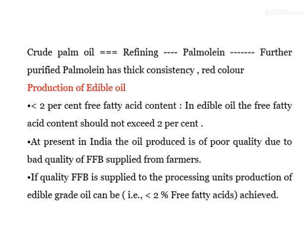The crude palm oil is then refined. Purified palm oil has a thick consistency and red color. For edible oil, free fatty acids content must not exceed 2 percent. Oil from the mesocarp (45–50%) is light yellow to orange-red depending on carotene content; kernel oil resembles coconut oil and is nearly colorless, with 50 percent oil obtained from kernel and endosperm. At present in India, oil produced is of poor quality due to bad quality fresh fruit bunches supplied by farmers. If good quality FFB is supplied to processing units, edible grade oil with less than 2 percent free fatty acids can be achieved.